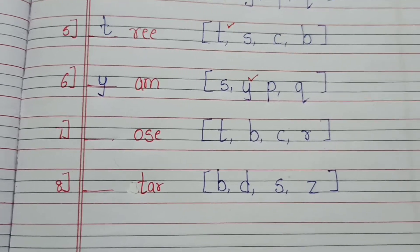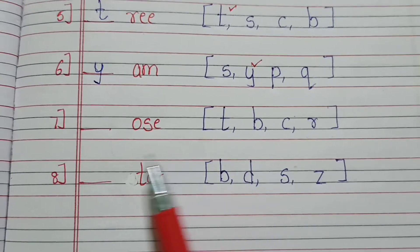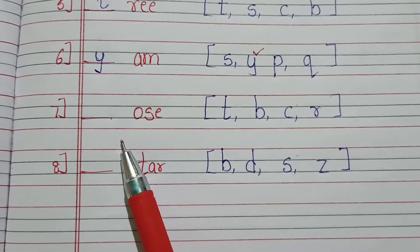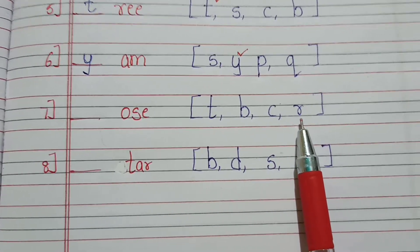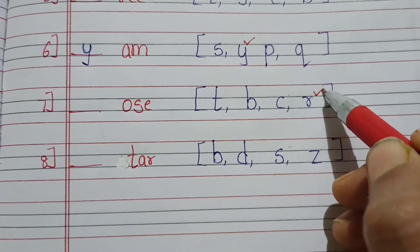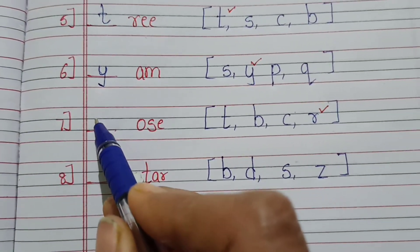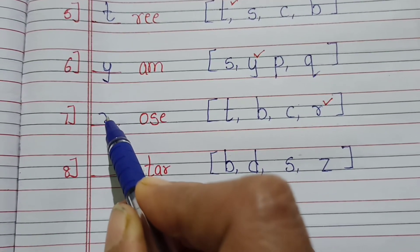Next is question number 7, dash O S E. So T, O, S, E, no. B, O, S, E, no. C, O, S, E, no. R, O, S, E, yes. R, O, S, E. So what is the correct answer? R. R is the correct answer. So we are going to write R here.